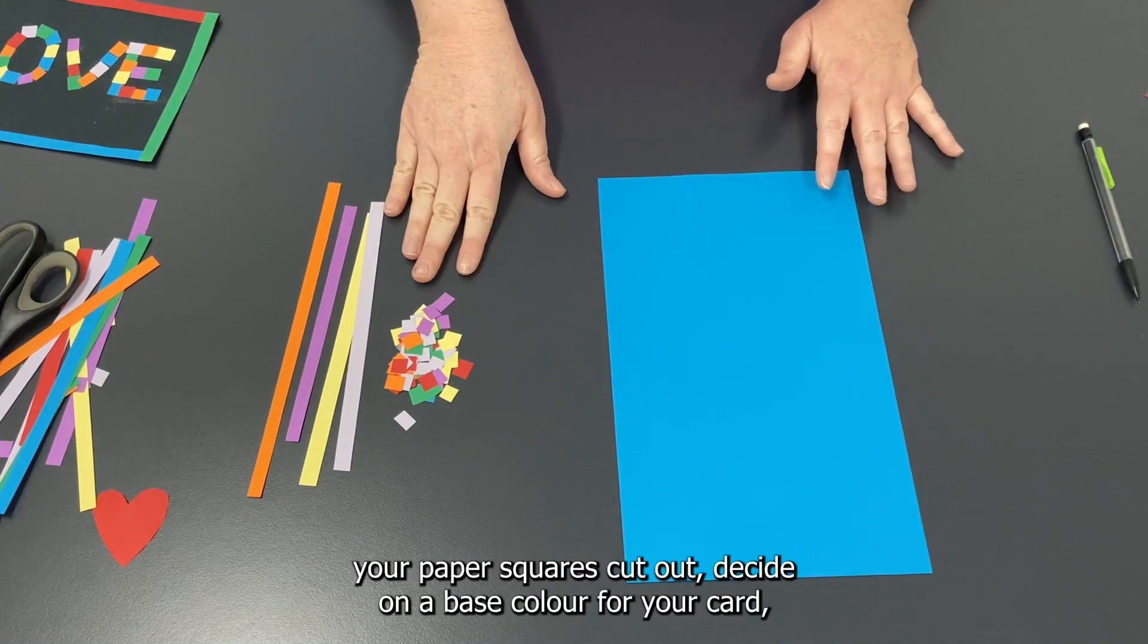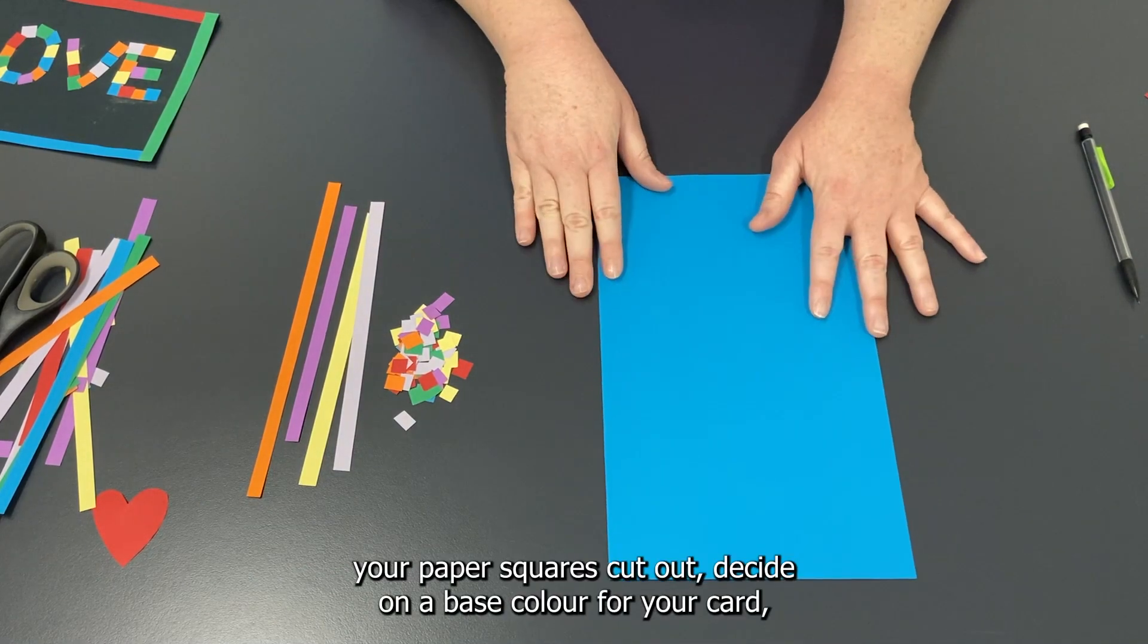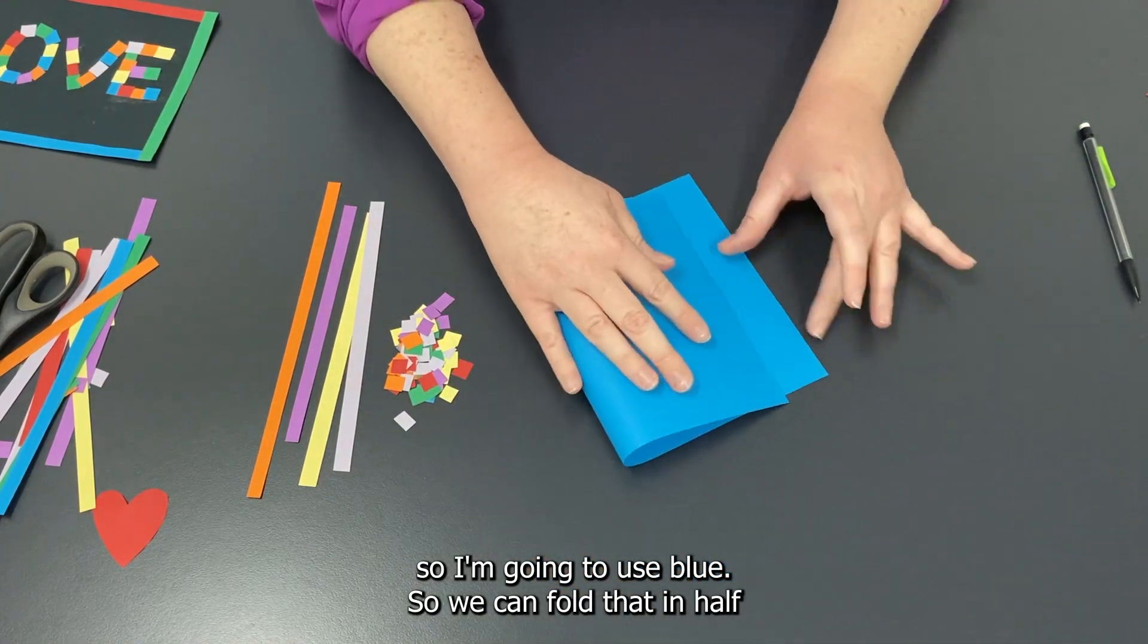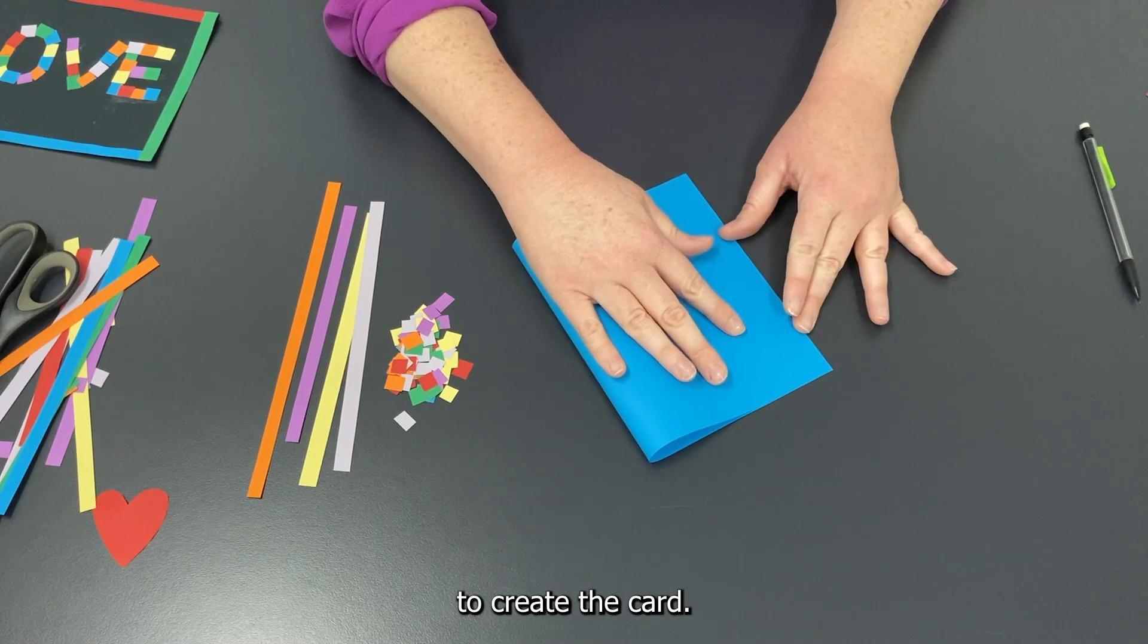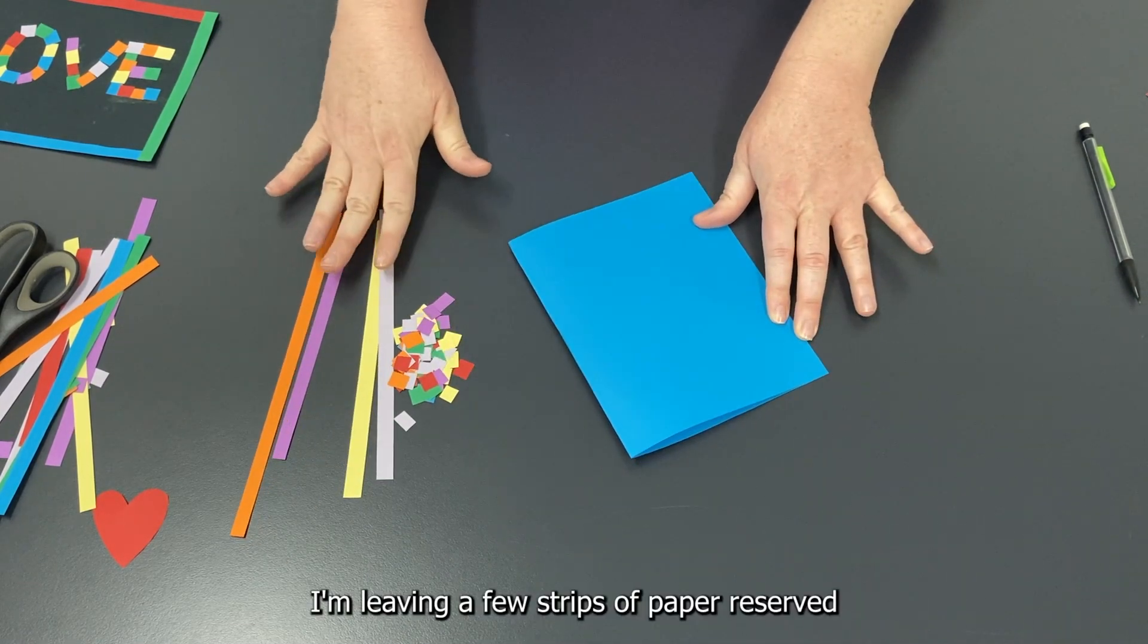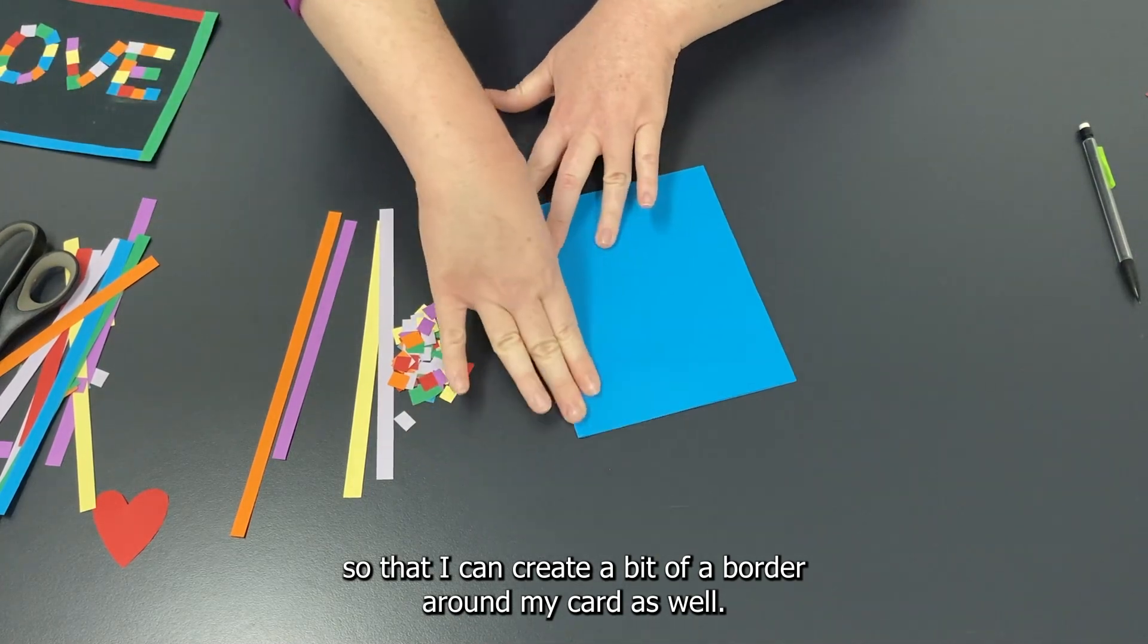Once you have your paper squares cut out, decide on a base color for your card. I'm going to use blue, so we can fold that in half to create the card. I'm leaving a few strips of paper reserved so that I can create a bit of a border around my card as well.